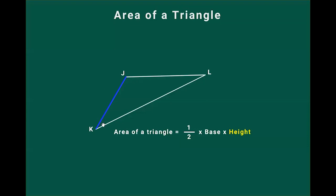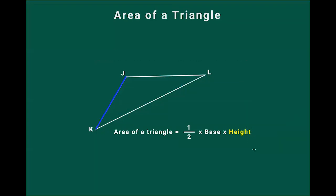What if I choose JK as base? If I choose JK as base, you can clearly see here that I cannot draw any line from the point L — L is the third vertex — to JK which will be perpendicular to JK. There is no line from point L that will make a 90-degree angle with JK. So how do we choose the height here? We have to extend JK. Even if you extend JK along K, we still cannot draw any perpendicular line from point L to JK extended.